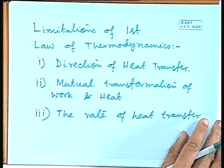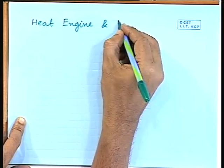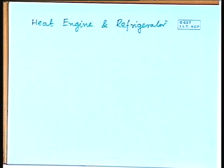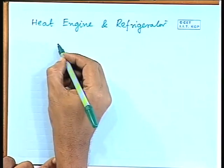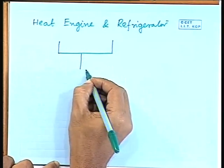Before doing that, I like to discuss two very important devices which are used in engineering very extensively, and knowledge of those devices is also important for understanding second law of thermodynamics. These two devices are heat engines and refrigerators. Let us first start with a heat engine. A heat engine is a device which operates in a cycle.